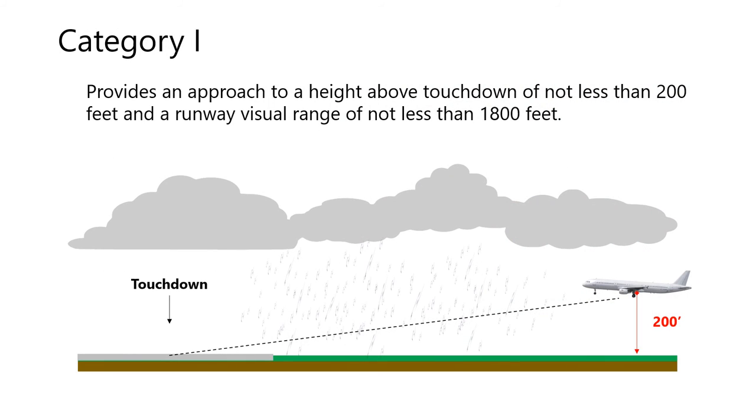Category 1 provides an approach to a height above touchdown of not less than 200 feet and a runway visual range of not less than 1,800 feet.